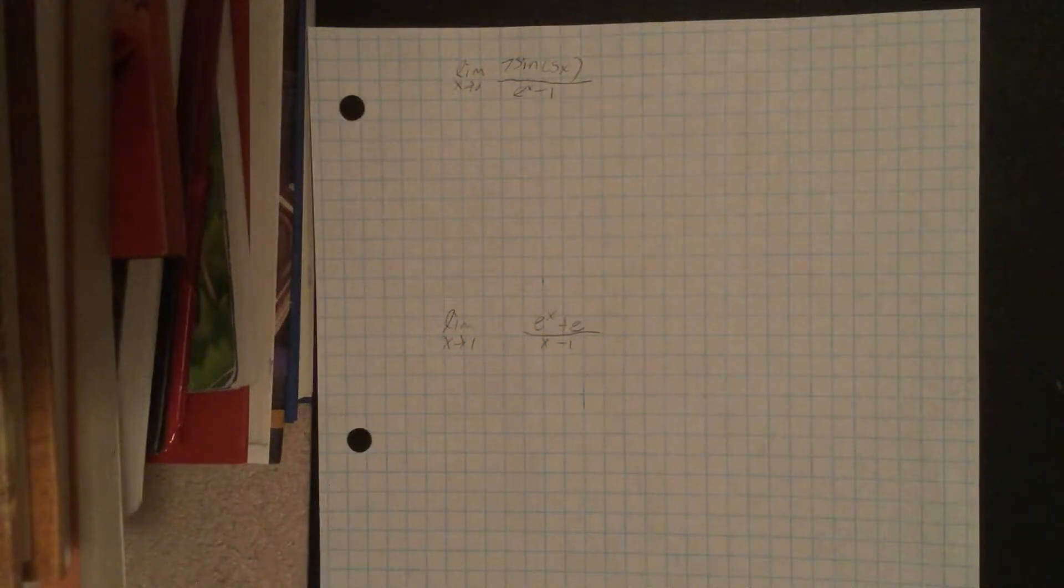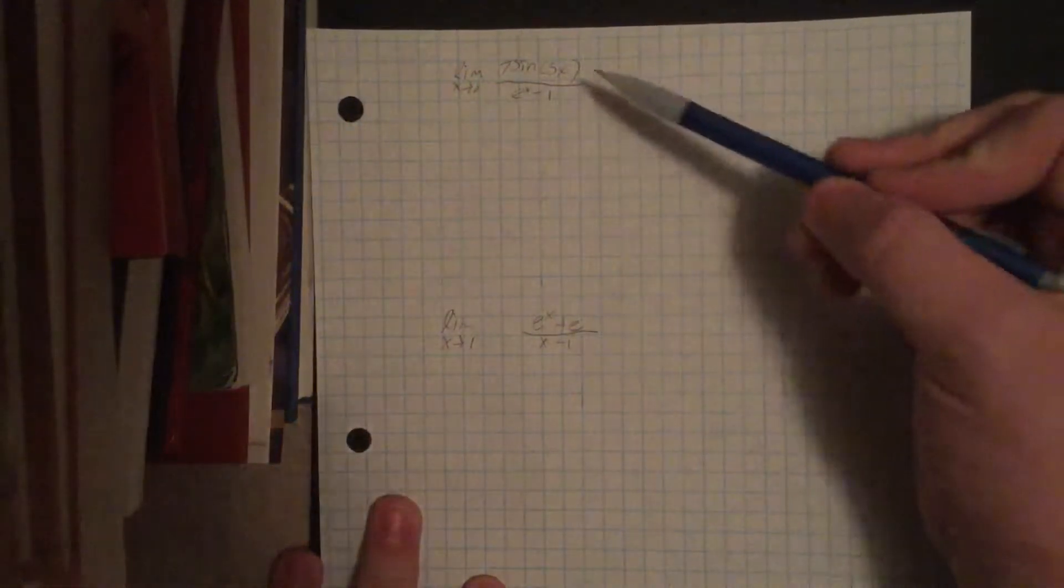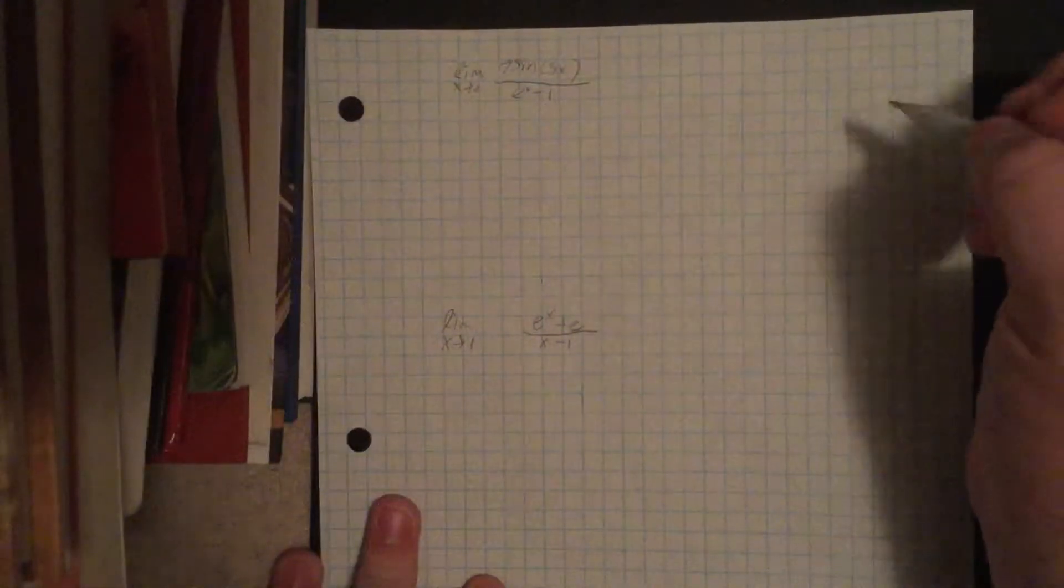In this video, we're going to be using Lope-Tol's rule with exponents and logarithms. So for our first question, we have the limit as x approaches 0 of 7 sine of 5x over e to the x minus 1.